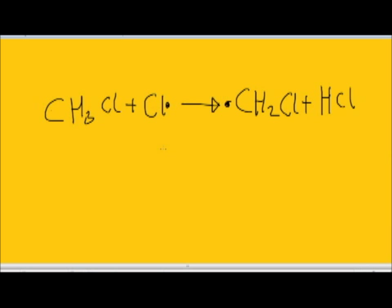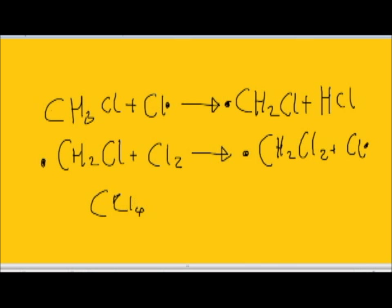The chloromethyl radical can react with diatomic chlorine to produce dichloromethane and another chlorine radical. And this can go on until you get CCl4, which is tetrachloromethane.